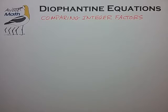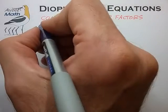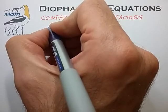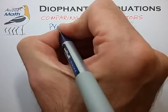This method shows up in all kinds of ways in number theory, and it is by far the single most used method in all of number theory, playing important roles in topics such as theory for generating Pythagorean triples.